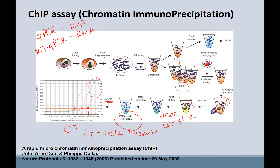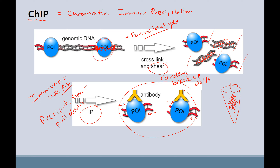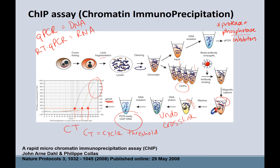In the methods, they talk about adding protease and phosphatase inhibitors. That's because they don't want their proteins being chewed up. We can make antibodies specific to the S5 phosphate or the S2 phosphate, so you can have two different antibodies specific to those different phosphorylation states — meaning you also don't want to lose those phosphates.